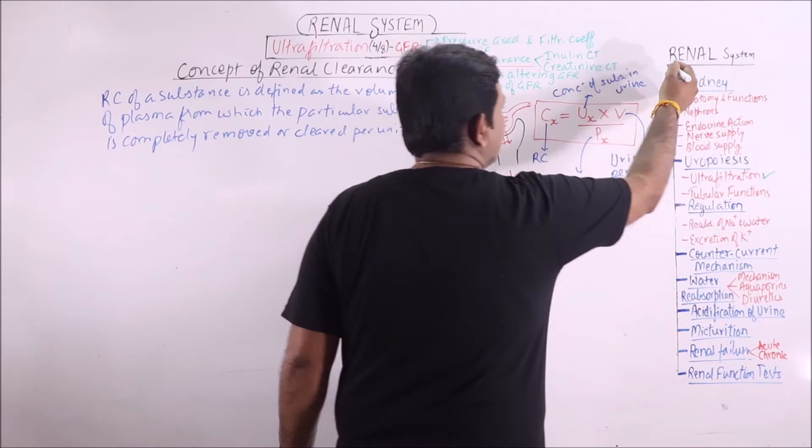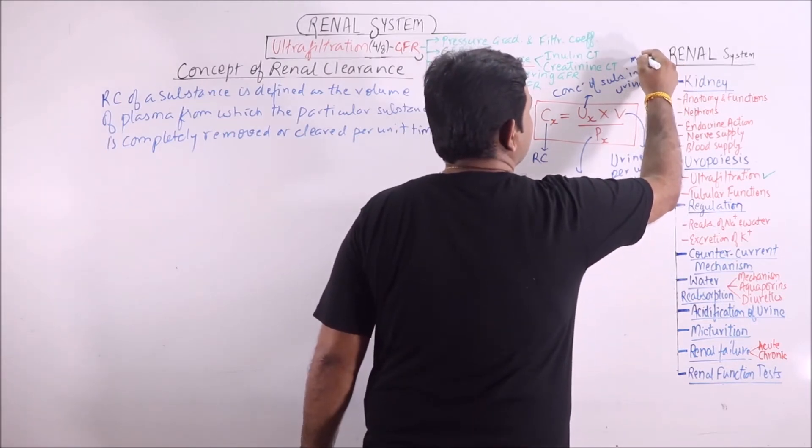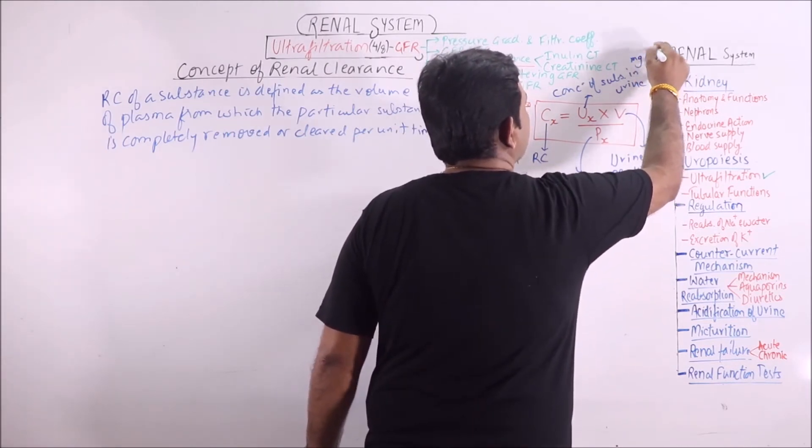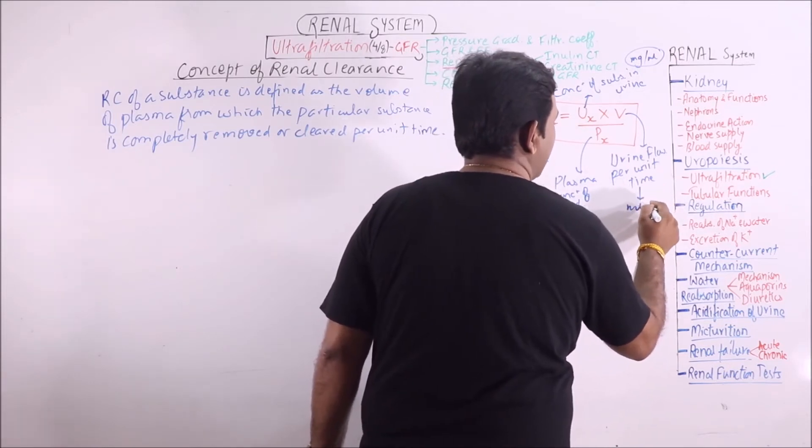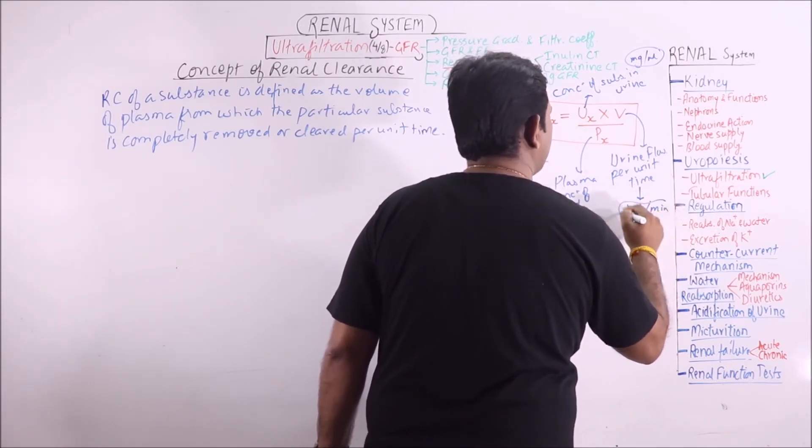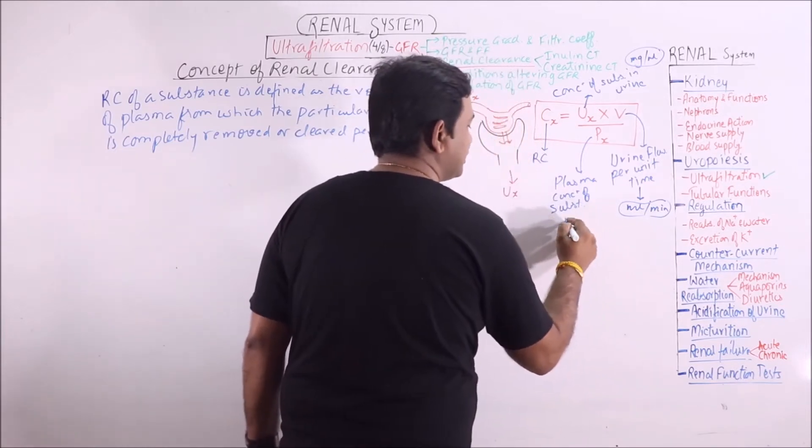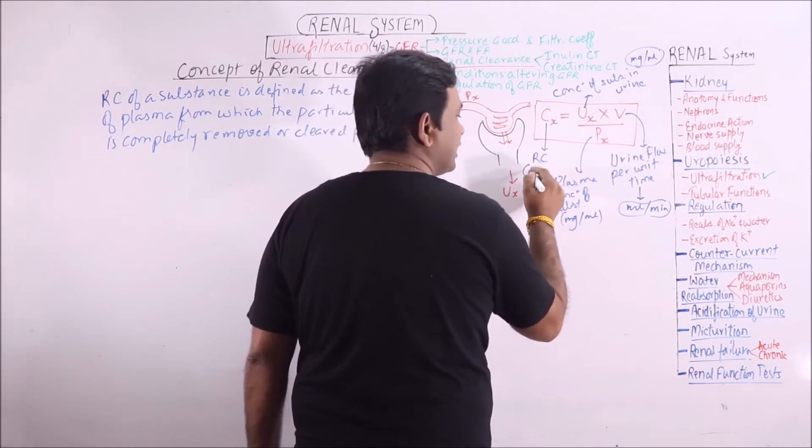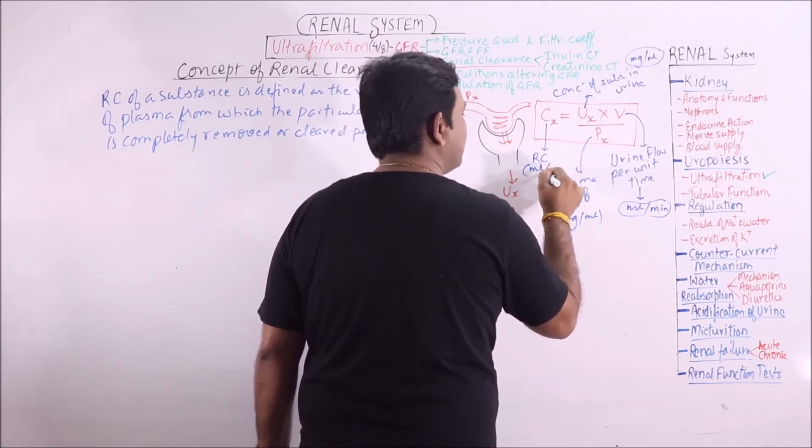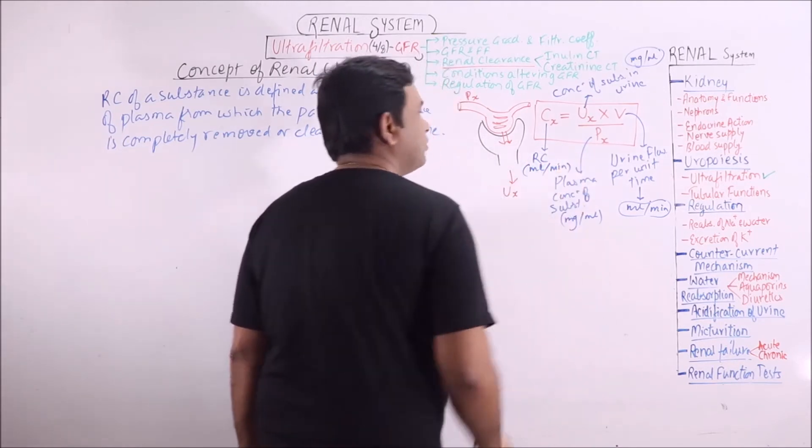Concentration of substance in urine is in milligram per ml. This one is ml per minute. Again, this will be in milligram per ml. So finally, the renal clearance will have the units ml per minute.